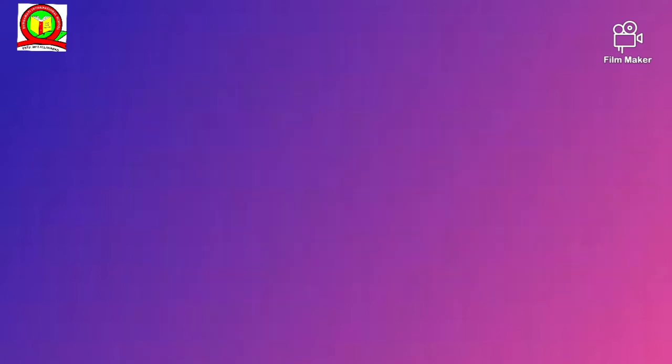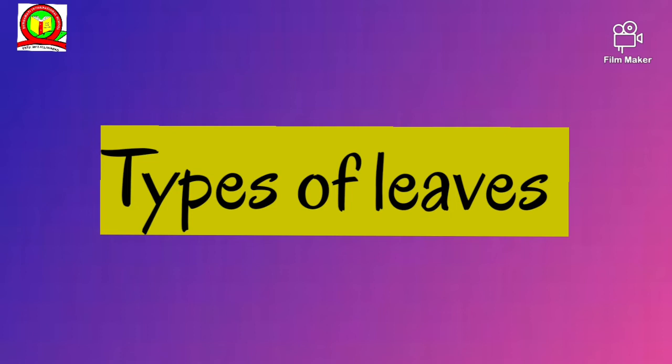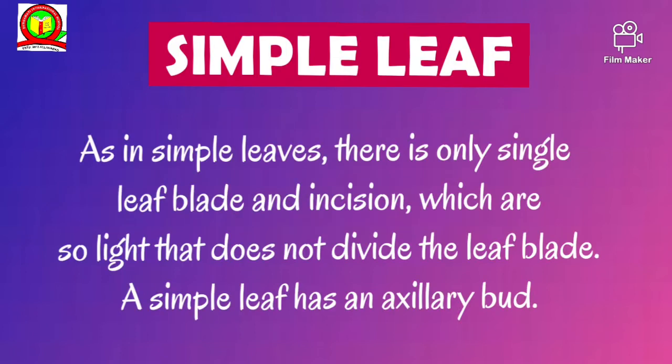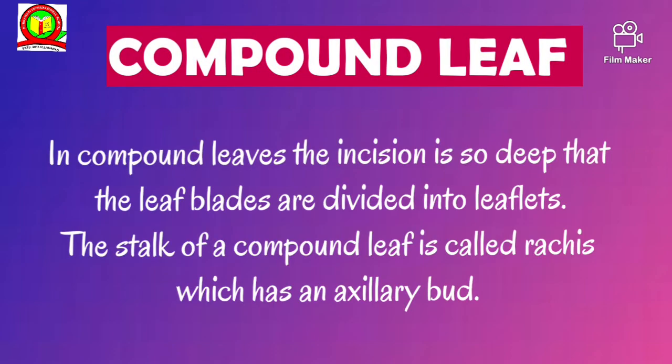Now we will talk about types of leaves. Simple leaves: in a simple leaf, there is only a single leaf blade, and incisions are so slight that they do not divide the leaf plate. A simple leaf has an axillary bud. Compound leaf: in compound leaves, the incision is so deep that the leaf blades are divided into leaflets. The stalk of a compound leaf is called the rachis, which has an axillary bud.